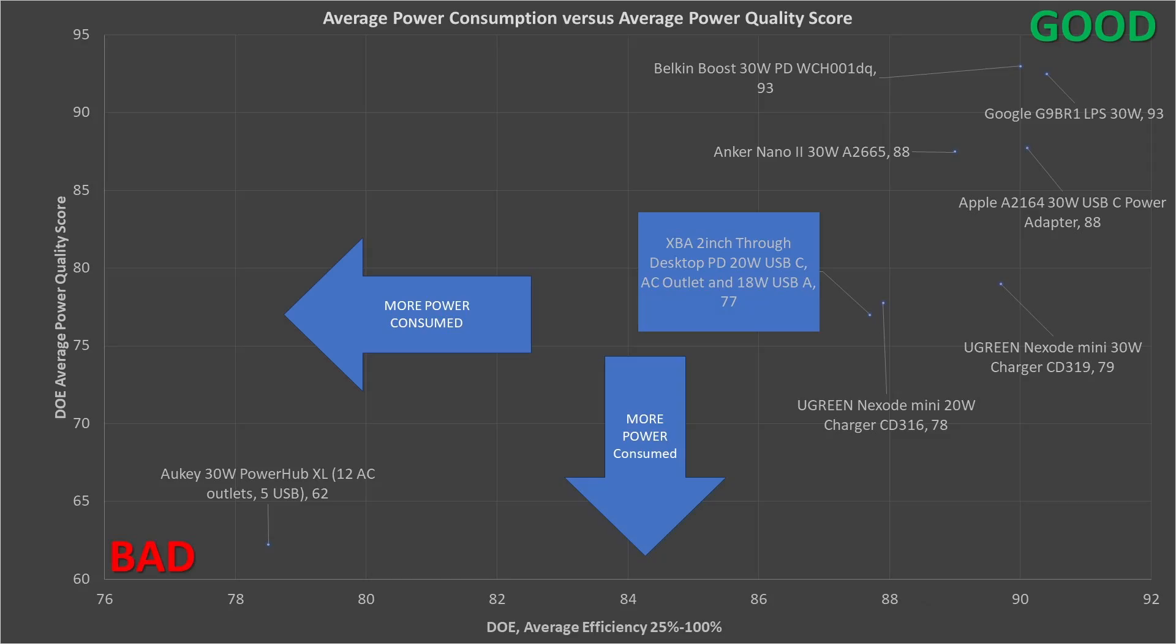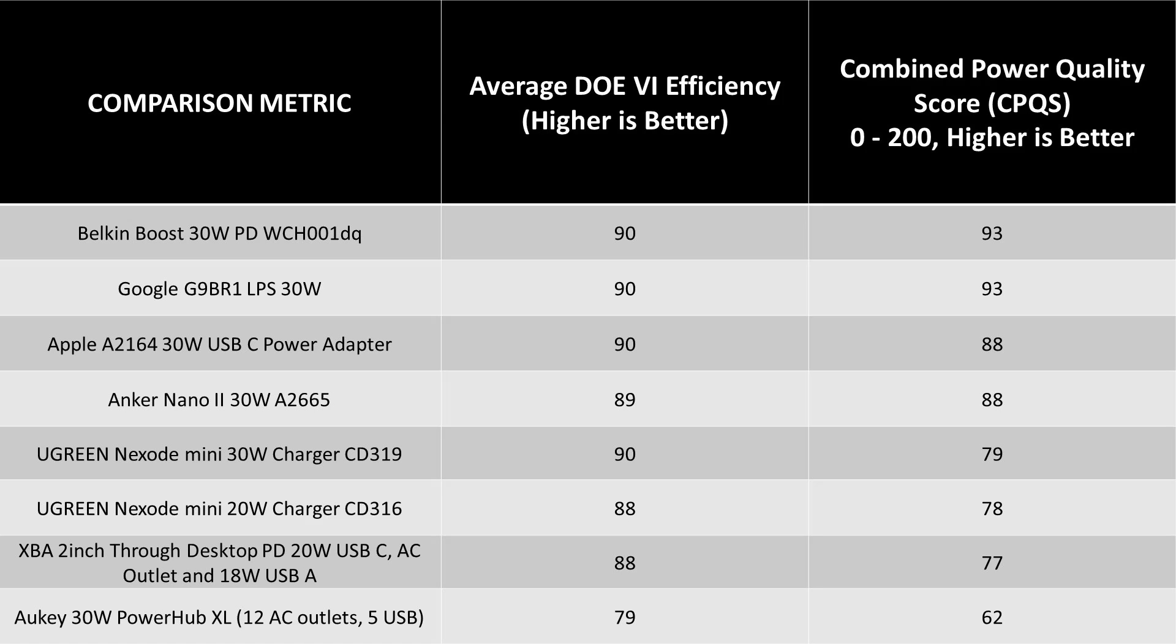This adapter's average efficiency, specifically looking at the DOE6 efficiency, that means 25% to 100% load efficiency, this power adapter does okay. I looked at one Aukey power station thing and that was truly a bad product. This one isn't like that, performance wise. The standalone adapter from bigger makers like Anker, Ugreen, Apple, Belkin, and Google are all better efficiency wise, but they're also one trick ponies.